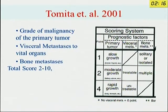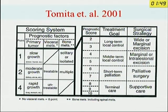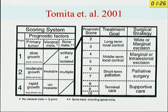Tomita is probably the most commonly used criterion to decide whether to go for surgery, based on three factors: the malignancy of the primary tumor, visceral metastases to vital organs, and bone metastases. If the score is two or three, you can get long-term local control and go for wide or marginal excision. If the score is four or five, only mid-term local control is expected, so marginal or intralesional excision is sufficient. Scores of six or seven indicate short-term palliation — surgery is palliative only. Above seven, you do not need surgery; go for supportive therapy.